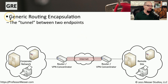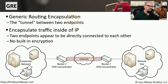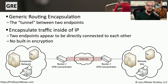One common way to create this tunnel is to use GRE, or the Generic Routing Encapsulation Protocol. GRE allows us to encapsulate other types of data within an IP packet and send that information to a remote site. When you use GRE, it appears that the two devices communicating are directly connected. But GRE doesn't include any special kind of encryption or security, so we need to add additional protocols inside of GRE to be able to provide that security.